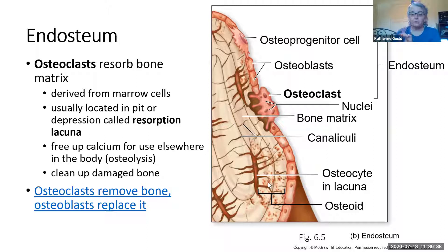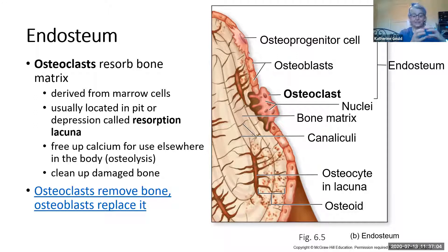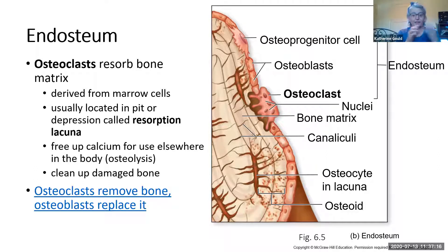Their job is really important because if you don't get enough calcium in your diet, your bones are going to give up calcium in order to make sure there's enough free calcium in your bloodstream so that your muscles and your nervous system can work. In order for your neurons to send an action potential, they have to have calcium to make exocytosis at the synaptic knob. Your skeletal muscles work the same way — if you don't have enough calcium, your muscles don't work either.